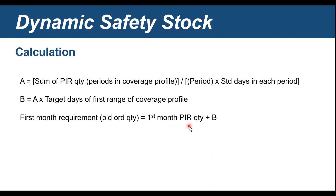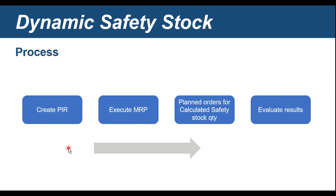Looking at the overall process: first, create planned independent requirements based on the periods defined in the setup. Then execute MRP, and planned orders will be created whose quantities are calculated from the dynamic safety stock calculation procedure along with the net requirement calculation. Once the planned orders are created, we can evaluate the results and verify the values are coming out correctly.